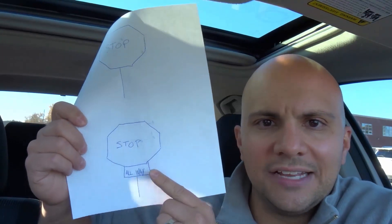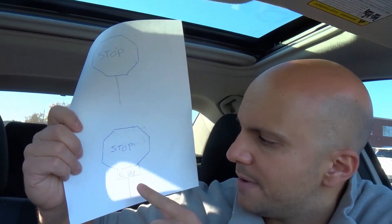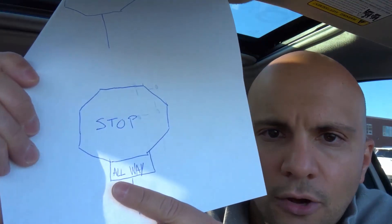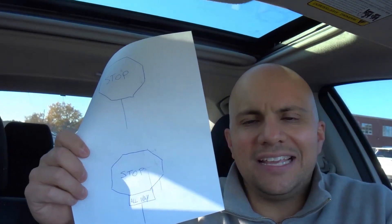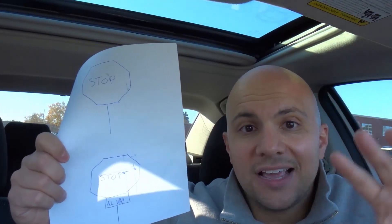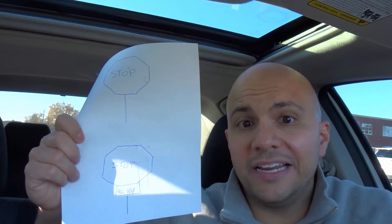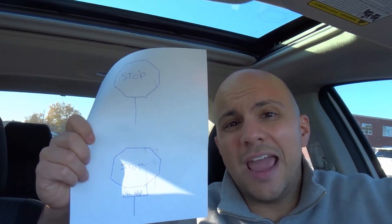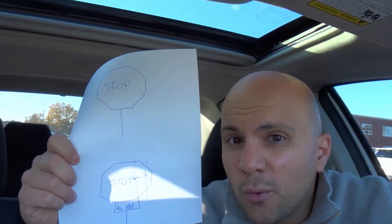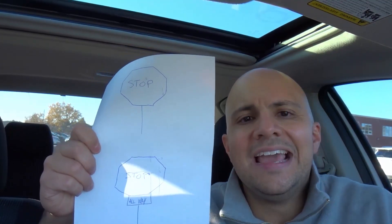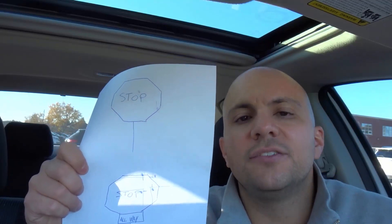Now the other one is a stop sign right here. It says stop, but underneath it, and I'll bring it a little bit closer, excuse my poor writing, it says all the way, which means that all of the ways have stop signs. So every direction of that intersection must stop, whether it's a three-way intersection, a two-way, a five-way, a four-way, whatever the case is. If it says all way, then all of those directions must stop.